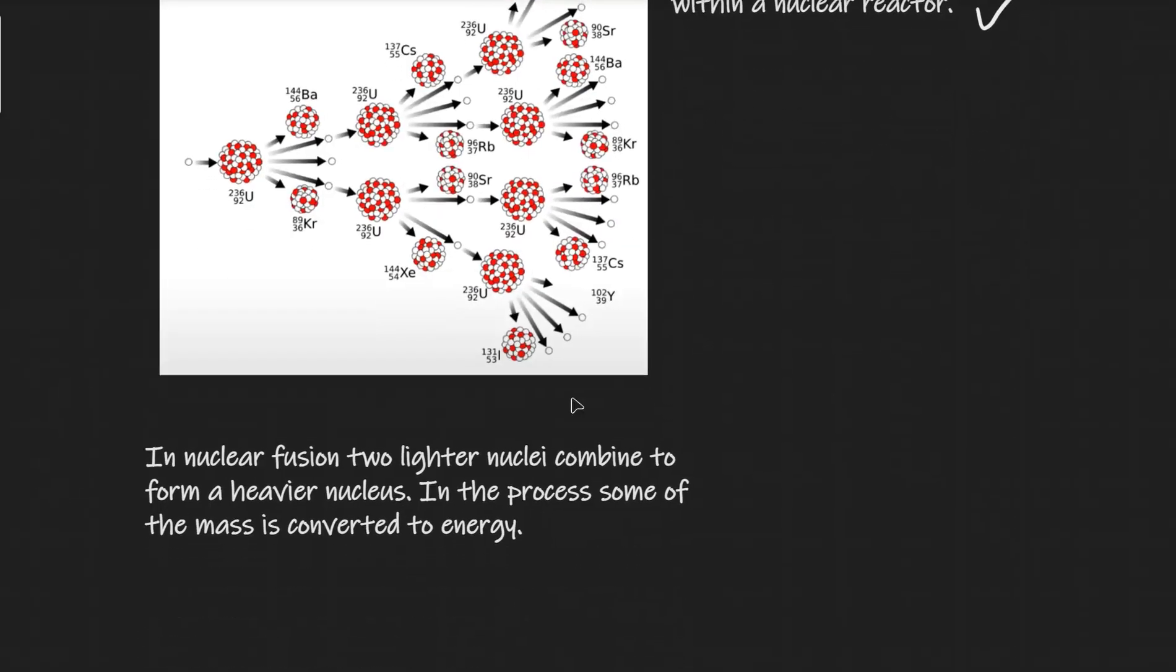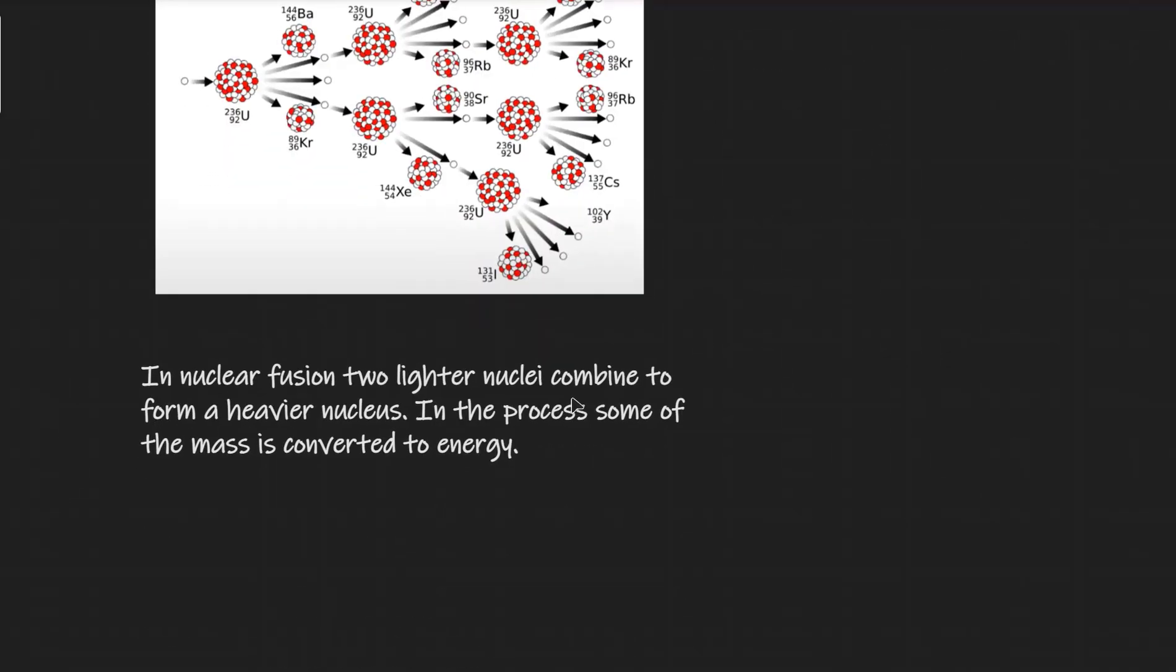Now this is contrasted to nuclear fusion in which two lighter nuclei, for instance something like hydrogen or deuterium and hydrogen, can fuse together to form helium. And this actually happens inside the core of a star. But you can have those two and they might fuse together to form a larger nucleus.